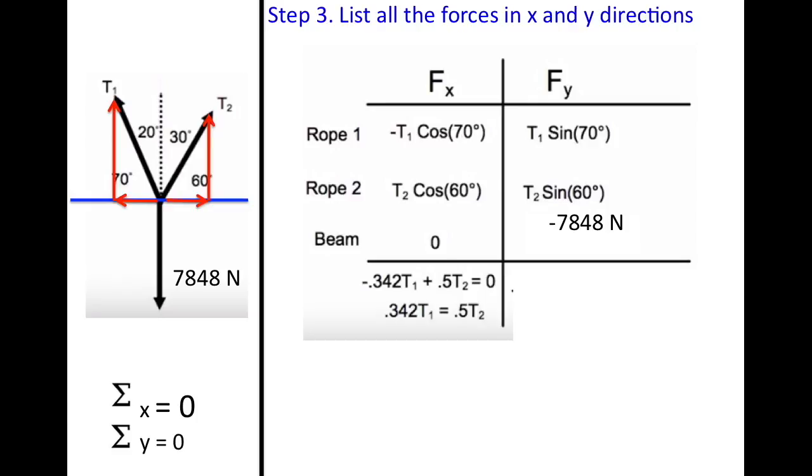For your y components, go ahead and add those up and set those to zero. And we get this final answer down here of 0.94t1 plus 0.866t2 equals 7,848 newtons because we moved this over one onto the other side of the equal sign.